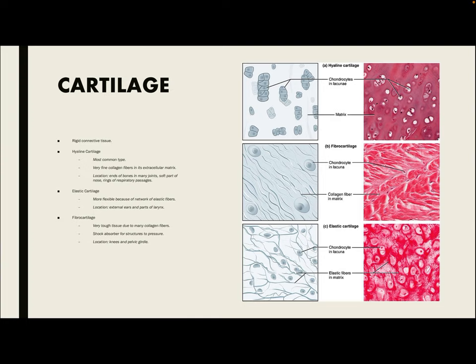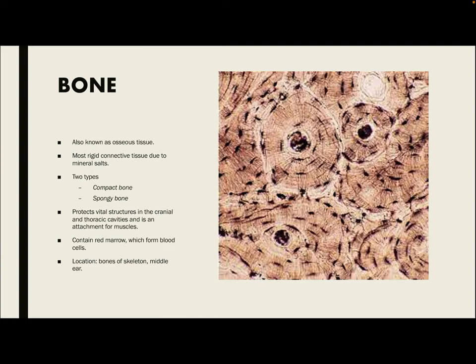Lastly, we have fibrocartilage, which is very tough tissue because it has a lot of collagen fibers. It's a shock absorber for structures subject to pressure — so when you hit your knee, that's what protects it. The locations are at the knees and the pelvic girdle.